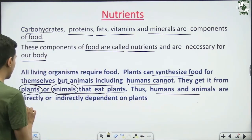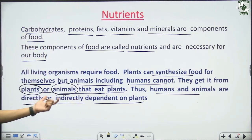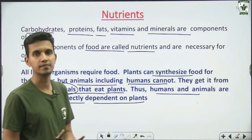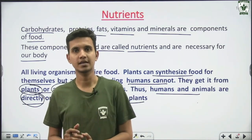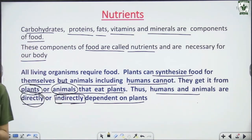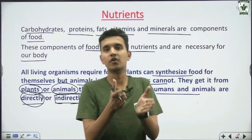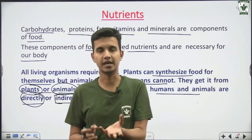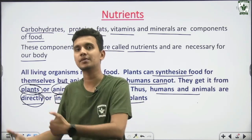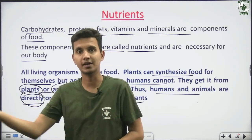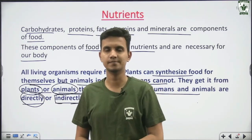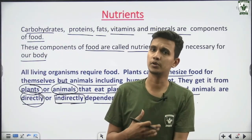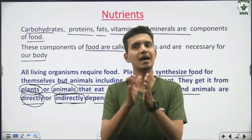Humans and animals are directly or indirectly dependent on plants. Herbivorous animals eat plants or plant components directly. Carnivorous animals eat other animals, but those animals also ate plants — so indirectly, all depend on plants. Humans who eat meat also depend indirectly on plants, since animals are fed on plants. We can say they are directly or indirectly dependent on plants.